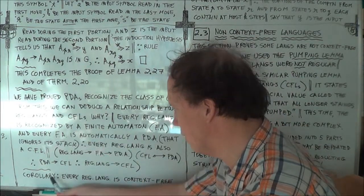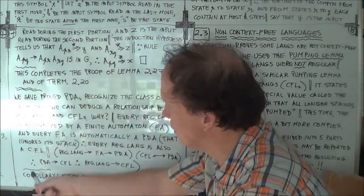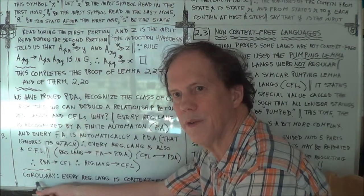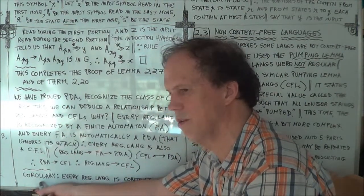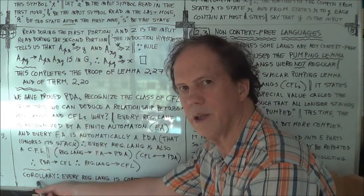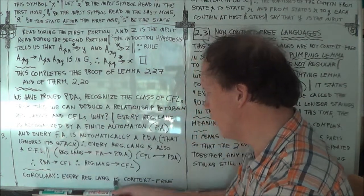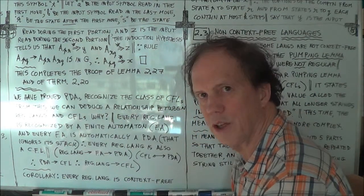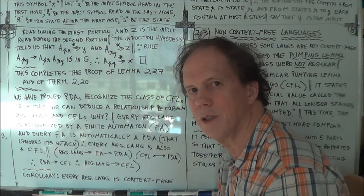A corollary—an after-proof that's usually fairly quickly derived from a main theorem—so every regular language is a context-free language.